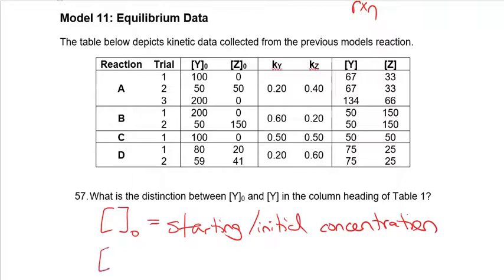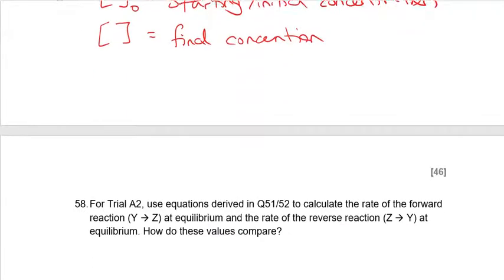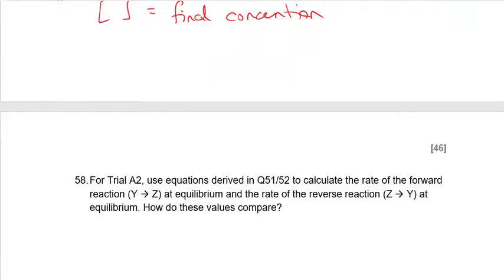And just a normal y is going to be our final concentration, our final amount. The key thing — and I'm going to say this again and again — this does not mean the reaction goes to the point where, for example in reaction a trial one, you have 100 molecules of y and it reacts until we get to 67 and just stops. That reaction keeps going, but every time there's a conversion between y and z you get the opposite to also occur, because those rates are going to be the same. That's our definition of equilibrium.